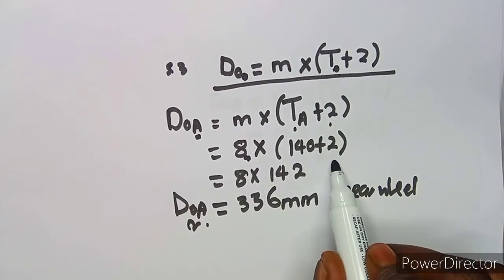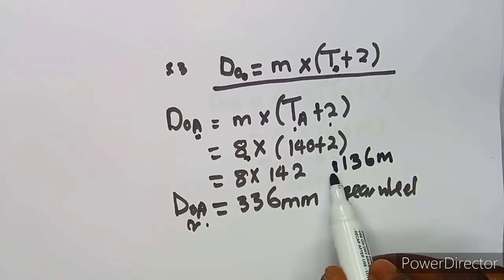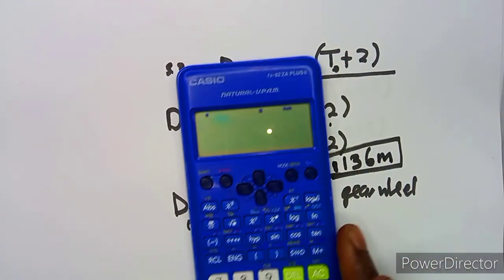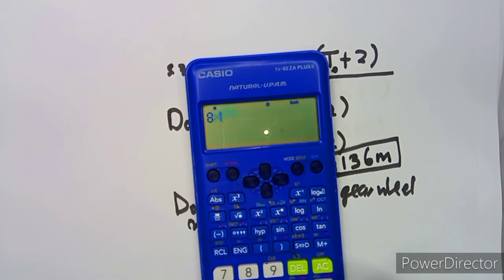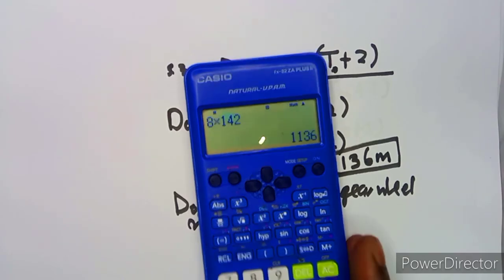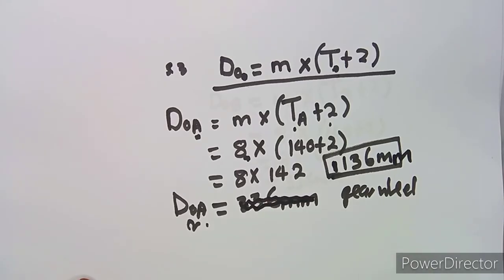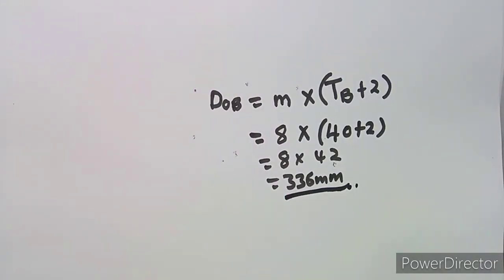Let me cross-check: for the gear wheel, OD_A = 8 × 142 = 1136 millimeters — so the correct answer is 1136 millimeters, not 336. And for the pinion, OD_B = 336 millimeters. So to confirm: the outside diameter of the gear wheel is 1136 mm and the outside diameter of the pinion is 336 mm.